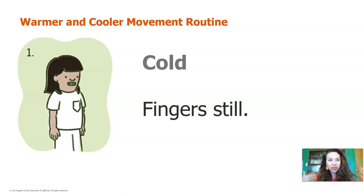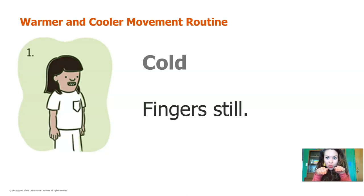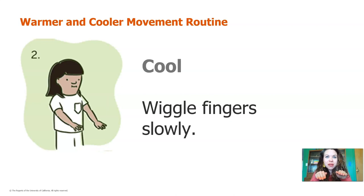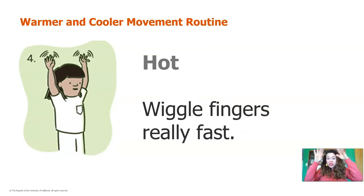Are you ready to do some moving around? Let's do this warmer and cooler movement routine. Here's how you do it: if I show you a picture of something that is cold, I want you to hold your fingers still — like frozen. If I show you something that looks cool, I want you to wiggle your fingers slowly. If I show you something warm, I want you to wiggle your fingers quickly. And if I show you something hot, I want you to wiggle your fingers really fast.